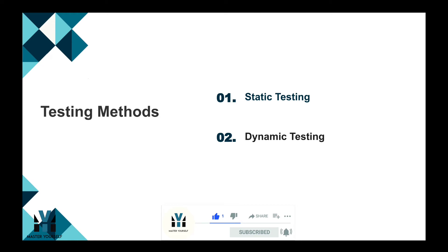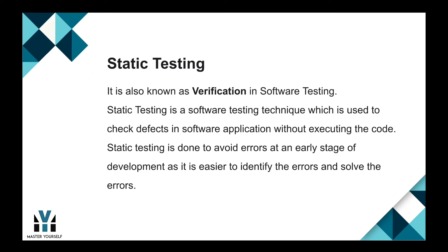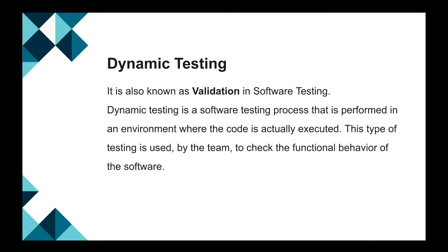There are two types of testing methods: static testing and dynamic testing. Static testing is also known as verification in software testing. It is a software testing technique used to check defects in a software application without executing the code. Static testing is done to avoid errors at an early stage of development, as it is easier to identify and solve errors.